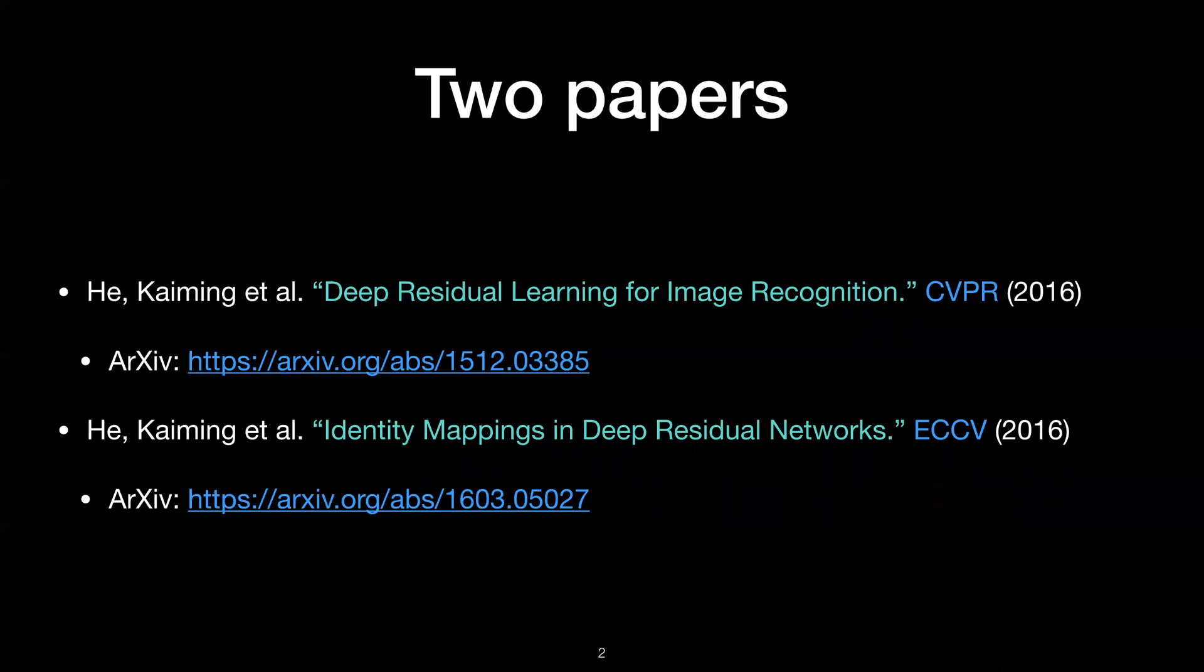Before we begin, I would like to mention that there are actually two papers dealing with ResNet written by the same authors. The first is the normal ResNet paper called Deep Residual Learning for Image Recognition. The second is their follow-up paper which contains analysis on residual building blocks and various ablation experiments. Originally, I planned to discuss both papers. However, I realized the presentation time is too short for discussing the details, so I will mainly focus on the first paper.